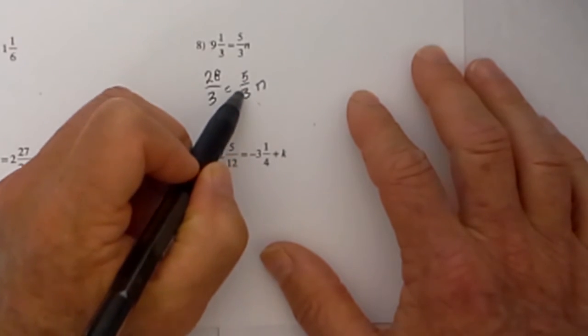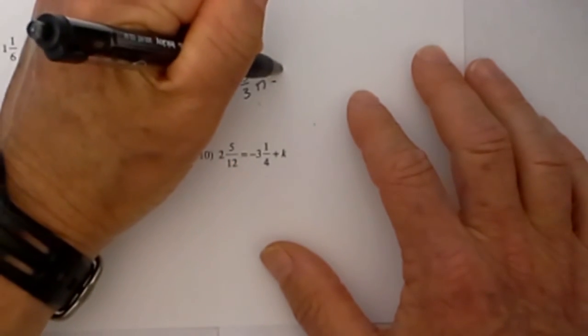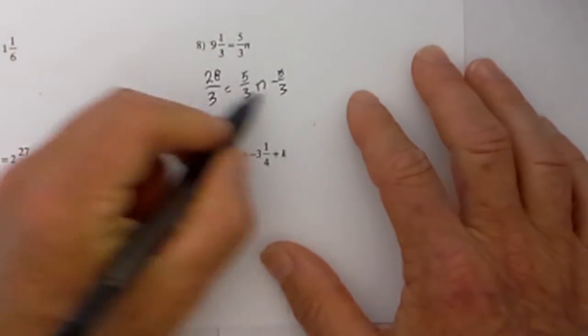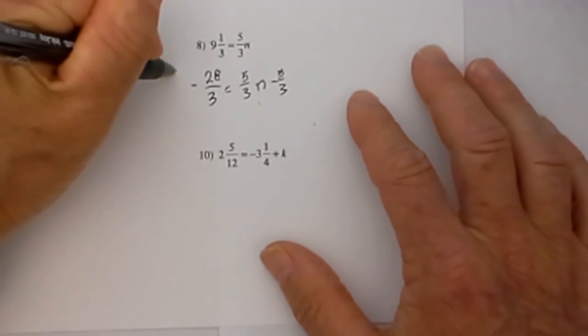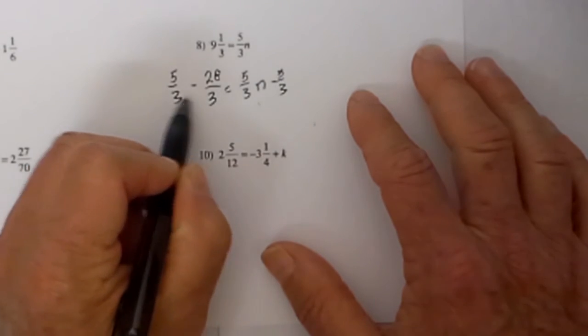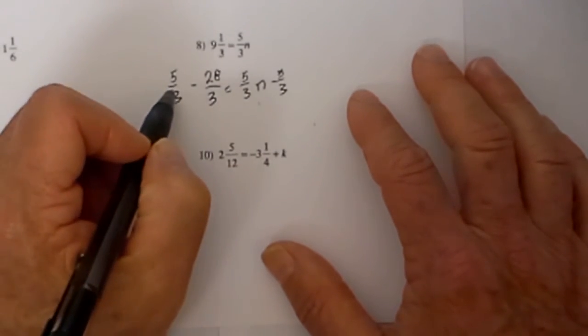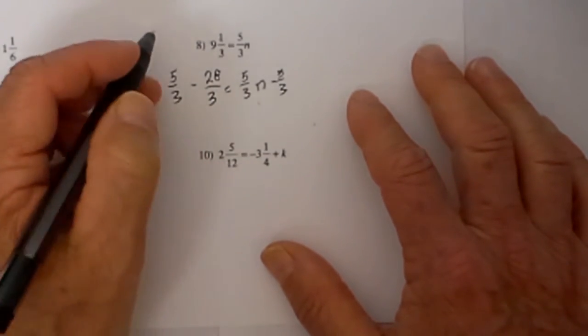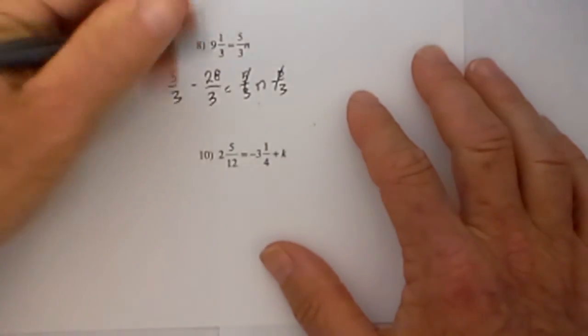Now in order to get rid of the 5 thirds over here I will subtract 5 thirds and what I do to one side I will need to do to the other side. This is easy because we already have a common denominator. So I just take 28 minus 5 because these two cancel.